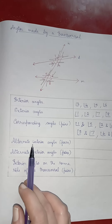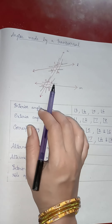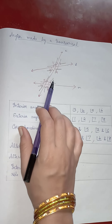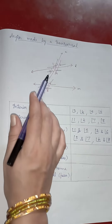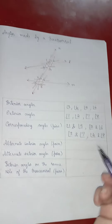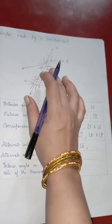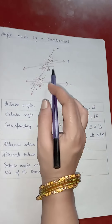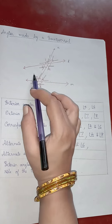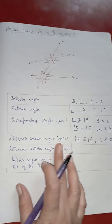Now let us see what are alternate interior angles. The interior angles are 3, 4, 5, and 6. Alternate means they lie on either side of the transversal. So angles 3 and 6 are one pair of alternate interior angles. Angle 4 and angle 5 — they lie on either side of the transversal, so angle 4 and angle 5 are alternate interior angles.